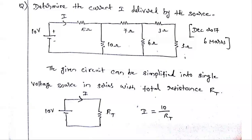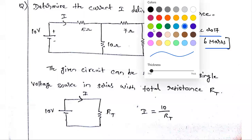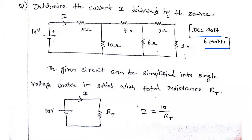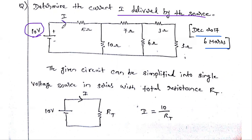Welcome to the circuit analysis playlist. We are going to solve one university problem — a December 2017 question worth six marks. The circuit contains resistors of 5, 10, 7, 6, 3, and 3 ohms connected in some configuration, powered by a 10-volt battery. The question is: determine the current I delivered by the source — that is, the total current supplied by the battery.